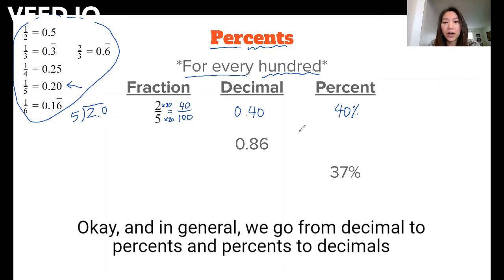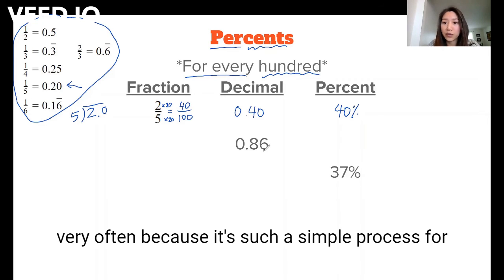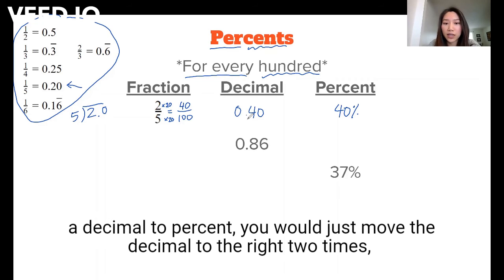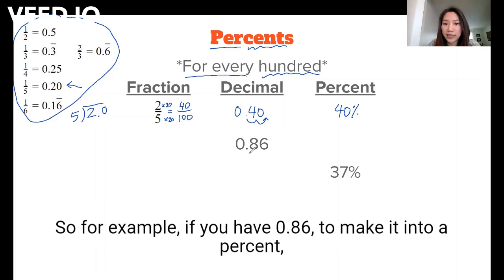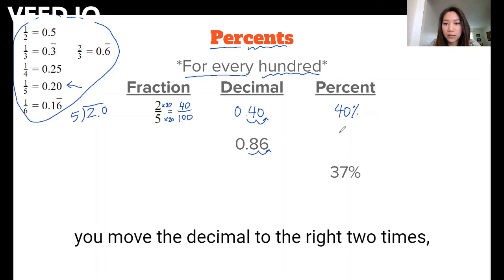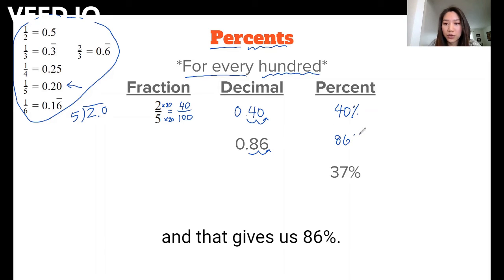And in general, we go from decimals to percents and percents to decimals very often because it's such a simple process. For a decimal to percent, you would just move the decimal to the right two times, and that gives us 40%. So for example, if you have 0.86, to make it into a percent, you'd move the decimal to the right two times, and that gives us 86%.